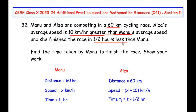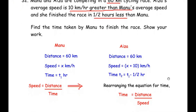Remember wherever the keyword 'less' appears we have to subtract, and wherever 'more' is given we would add. Now, let us find the relationship between distance, time, and speed. Speed is equal to distance over time. We need to find time, so rearranging the formula — time equals distance over speed.